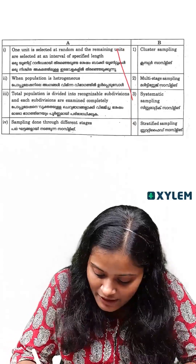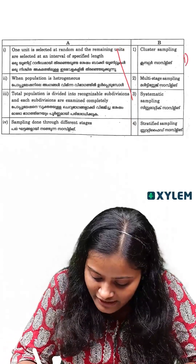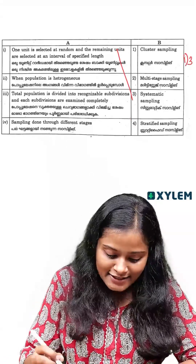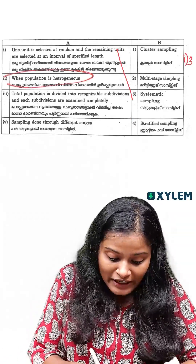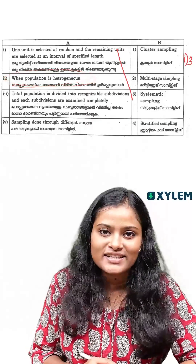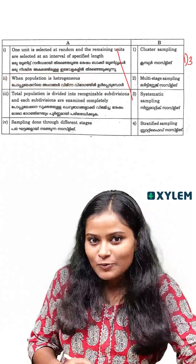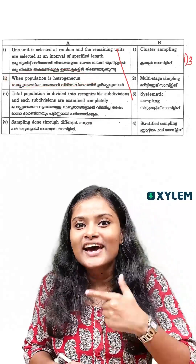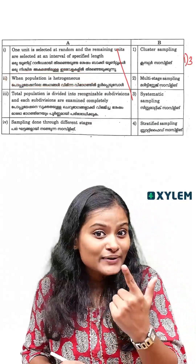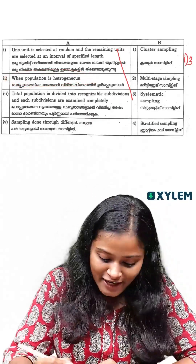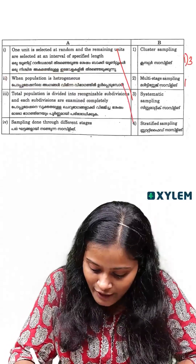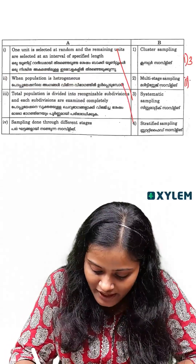What is systematic sampling? We have three answers. When the population is heterogeneous, the stratified sampling method is used. What sampling method is that? That is stratified sampling and so forth.